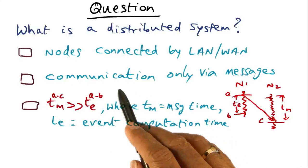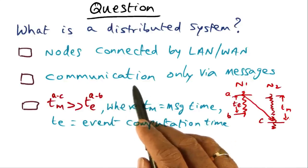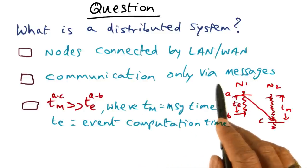The second choice says that a distributed system is one in which communication happens only via messages.